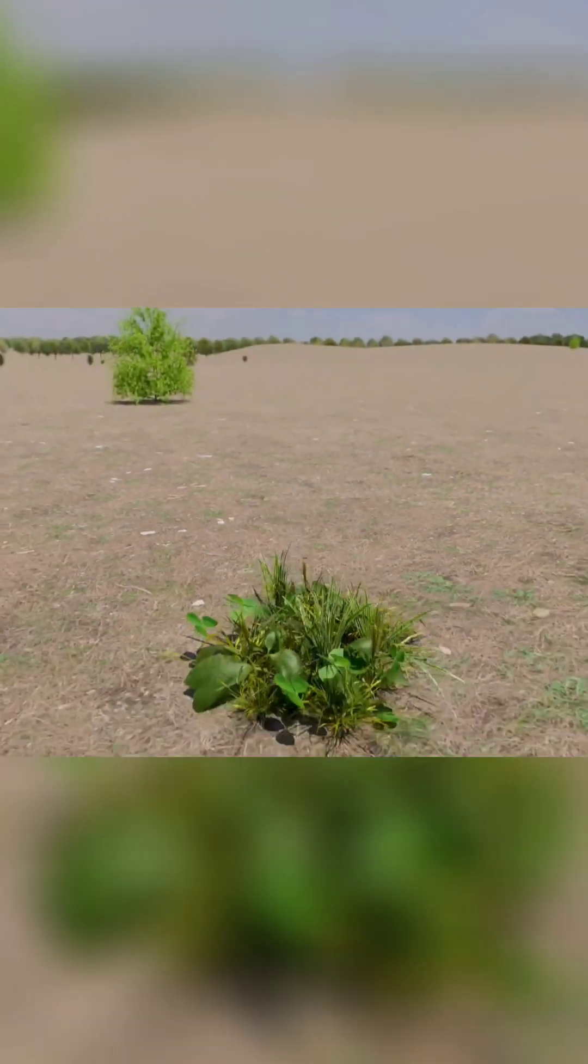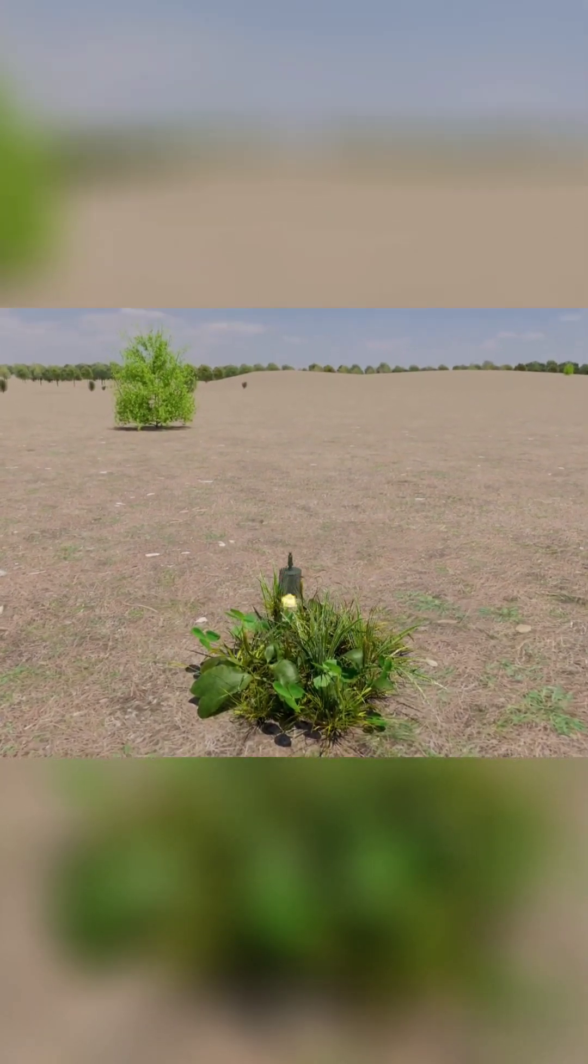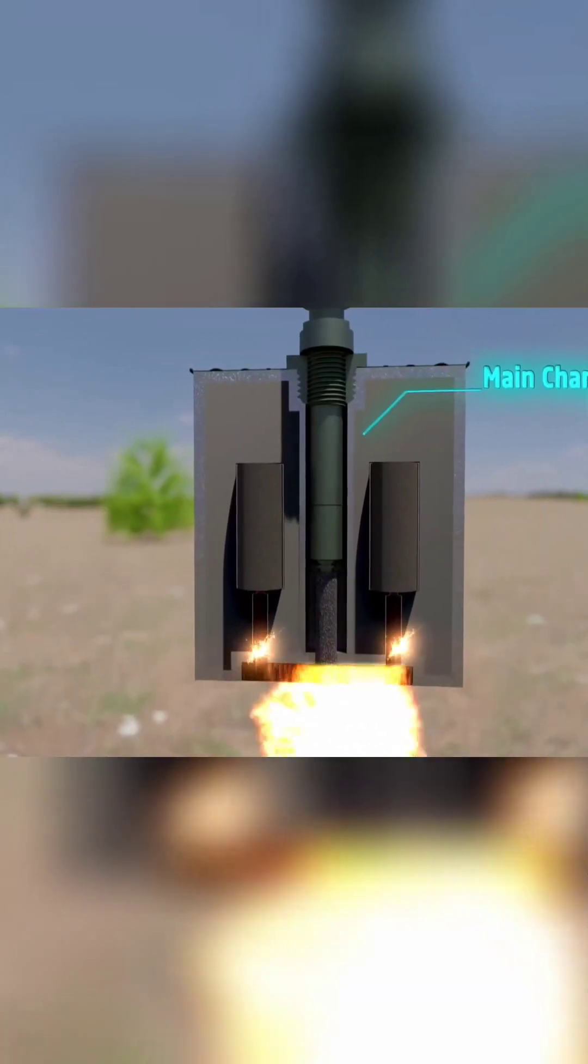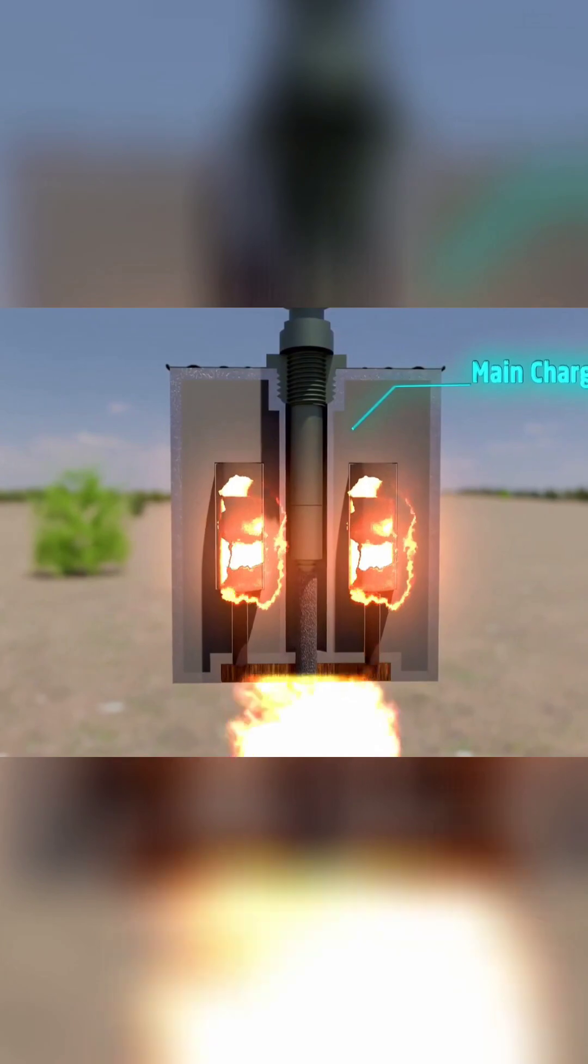The mine rises to a height of 0.3 to 1.7 meters before one or both of the pyrotechnic delays triggers the detonator, which detonates the mine's main charge. The main charge explodes and sprays high-speed metal fragments 360 degrees around the point of detonation.